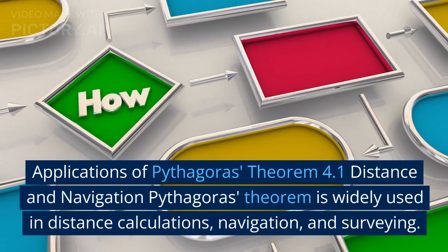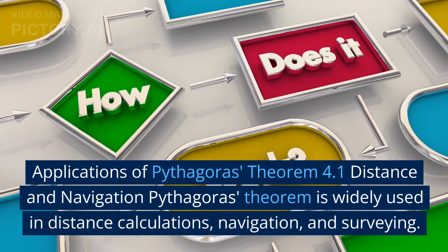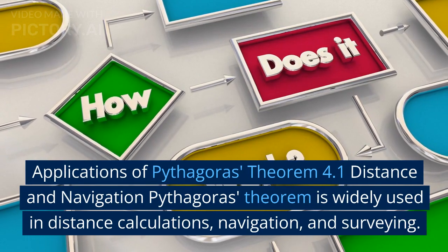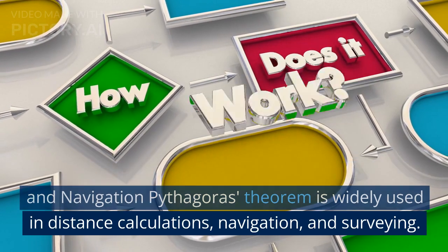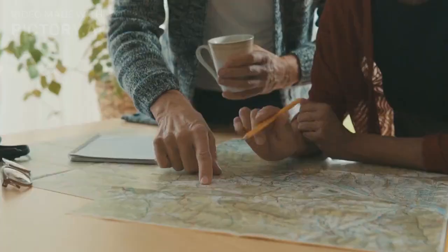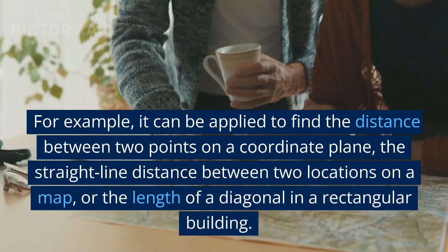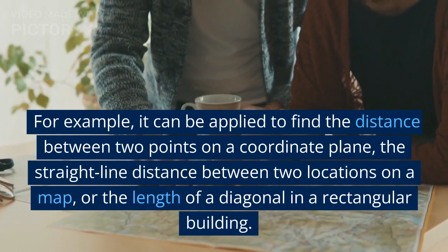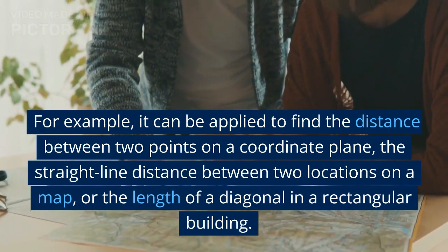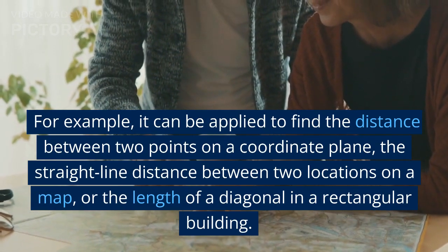Applications of Pythagoras' Theorem: Distance in Navigation. Pythagoras' theorem is widely used in distance calculations, navigation, and surveying. For example, it can be applied to find the distance between two points on a coordinate plane, the straight-line distance between two locations on a map, or the length of a diagonal in a rectangular building.